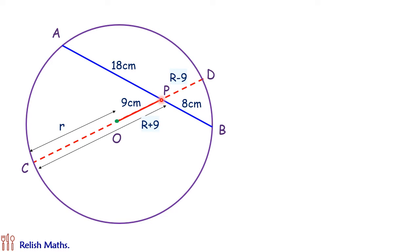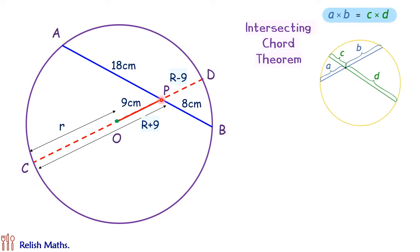Now here further we'll use the chord intersecting theorem. In this intersecting chord theorem, if the two chords are intersecting each other, then the product of the length of the chords, that is A times B, will be equal to C times D.